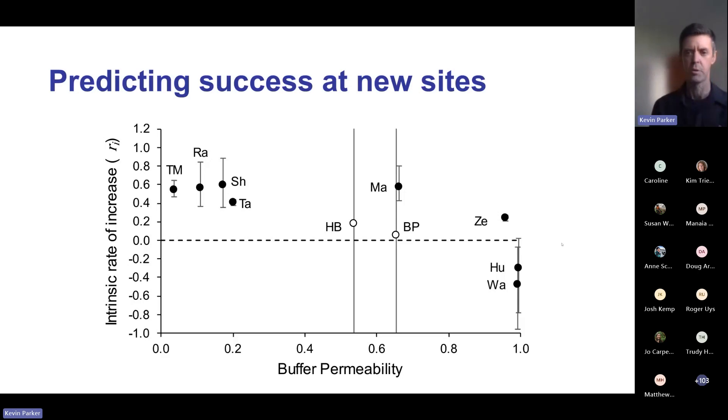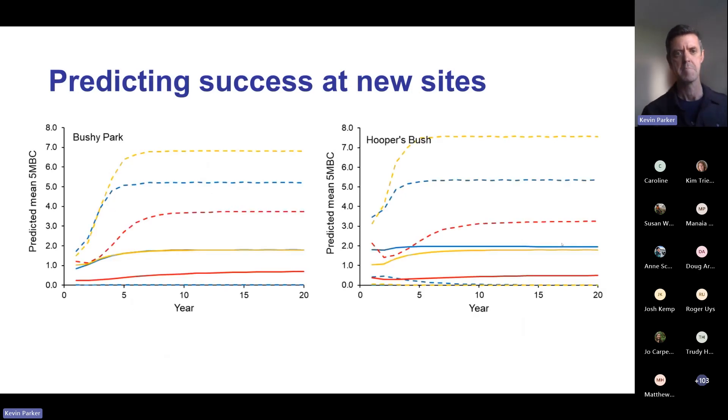Based on these sites, at Hooper's Bush and Bushy Park Tarapuruhi (the white open circles), we think the intrinsic rate of increase will be above zero, so we think these populations will probably grow. But you can see the credible intervals are super wide, so there's a lot of uncertainty around our estimates. If we predict our mean population growth as a function of connectivity with three different measures, at each site we think there's going to be population growth, but there's a lot of uncertainty because we're trying to make predictions based on a relatively small sample.